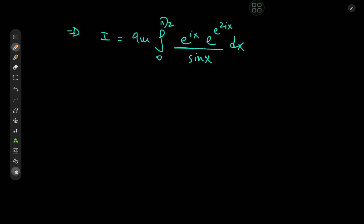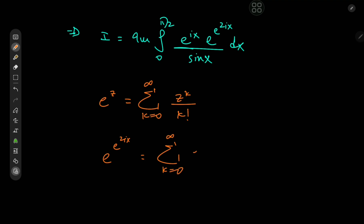What we have now is a complex exponential times an exponential whose argument is itself a complex exponential — complex, to say the least. However, when faced with an exponential to another exponential, the series expansion for the exponential usually comes in handy to get rid of one layer. So e to the z expands as the sum over non-negative integers k of z^k divided by k factorial. Thus e to the (e^(2ix)) expands as the sum over k of e^(2ikx) divided by k factorial, and now we only have one level of exponential to deal with.